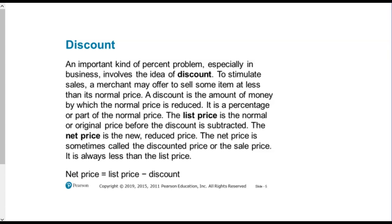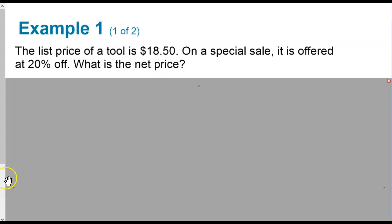The list price is the normal or original price before the discount is subtracted, and the net price is the new reduced price. The net price is sometimes called the discounted price or the sales price, and it is always less than the list price. So it's really important, especially as buyers, that we want to be able to get more for less.